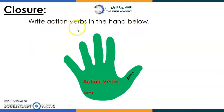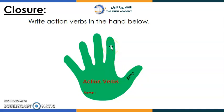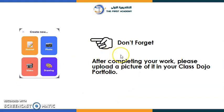For the closure, write action verbs in the hand diagram below. The first one is done for you — 'jump.' Think of four more action verbs. One example is 'cook' — well done! Finally, after completing your work, upload a picture of it to your Class Dojo portfolio. Thank you everyone, have a nice day — bye!